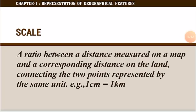Scale. A scale is a measuring line which shows the relation of the distance between two places on a map to their actual distance on the land. We can simply define it as a ratio between a distance measured on a map and the corresponding distance on the land connecting the two points, represented by the same unit. For example, 1 cm on the map represents 1 km on the ground.